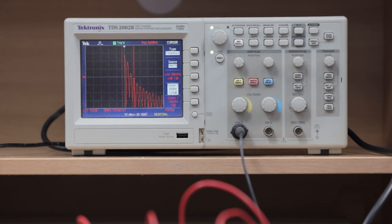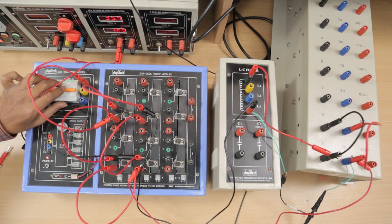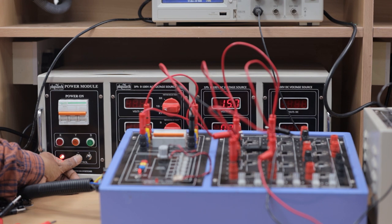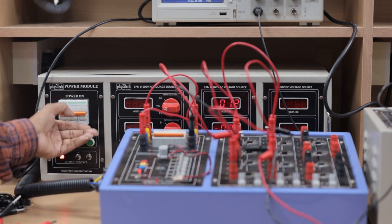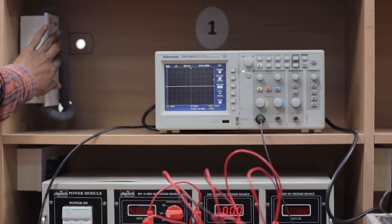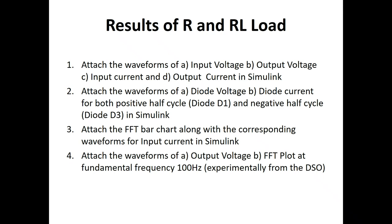We are now done with the single-phase uncontrolled diode rectifier experiment for both R and RL loads. Switch off the circuit MCB, bring the voltage back to zero, switch off the power module MCB and meter switches, and switch off the main three-phase supply. Results of R and RL load simulation are complete. Retrieve the saved results from your folder.